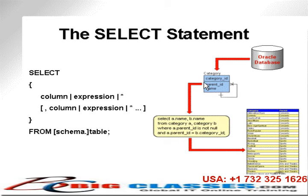As you can see from this diagram, I have a single schema table — the category table — in the content schema, sitting in the Oracle database. I would execute a select statement against the category table and pull out some data. That's how the select statement works. Very simple, actually.